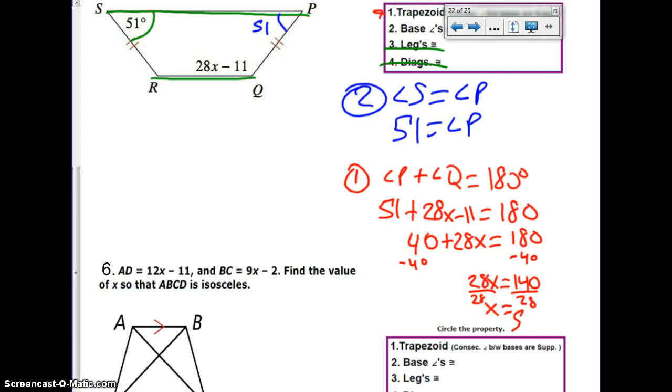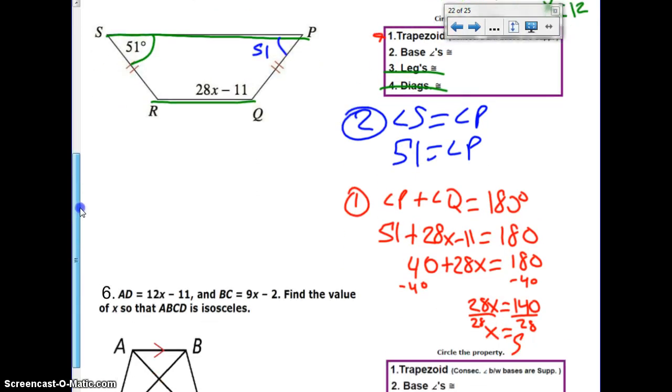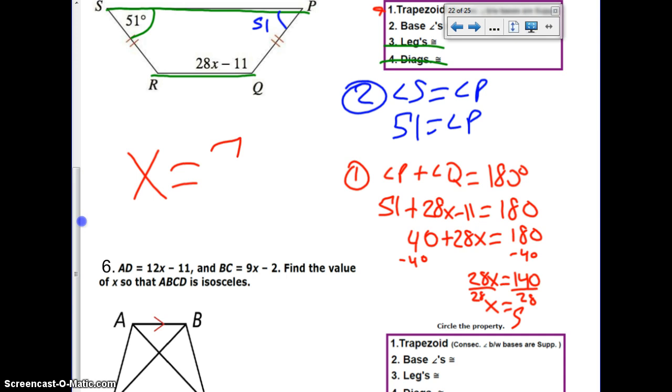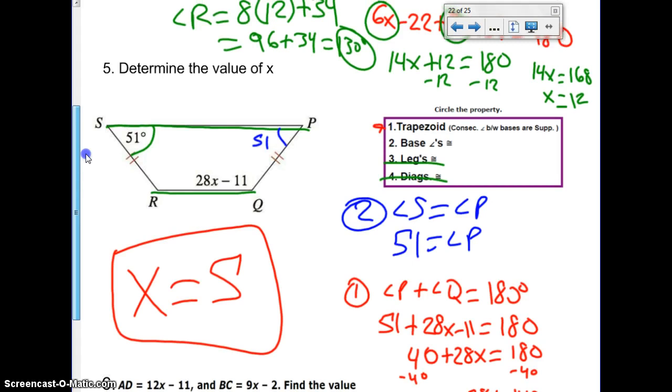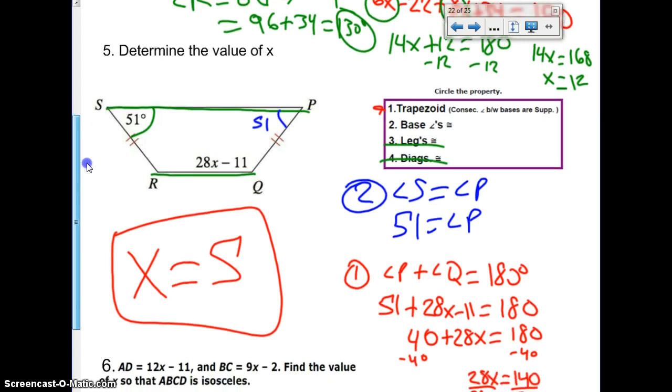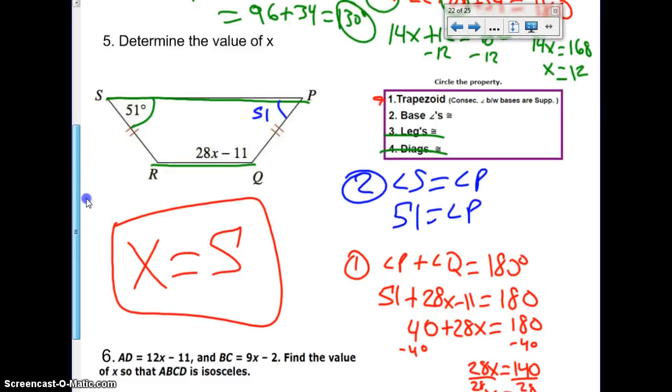So X is 5. Go back to the question. They told you to find the value of X. So our final answer, X equals 5. So right there, you saw us using a combination of two of our properties. We used number 2 to get us to a point where we could actually solve for X. We used property 2, and then we used property 1.